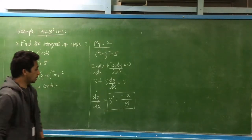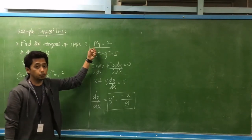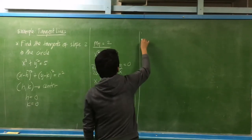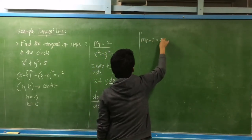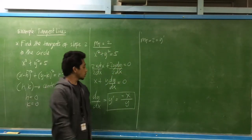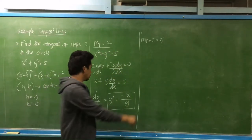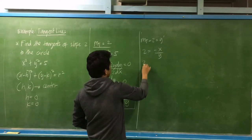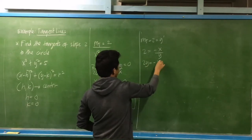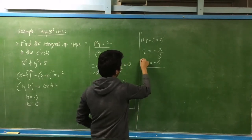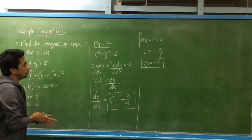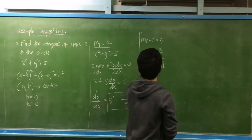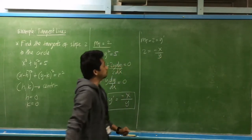To determine the value of x and y, the slope 2 is given — that should be the slope of the tangent lines. So m equals 2, which equals y prime. Substituting the equivalent of y prime equal to 2, we have 2 is equal to negative x over y, or 2y is equal to negative x. Let's call this equation 1.